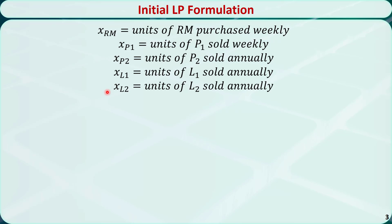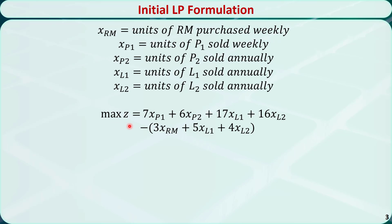With these definitions, the profit is equal to the revenues minus the costs. The total revenue is equal to the sum of the unit selling price times the quantity of each type of product. The total cost is equal to the raw material cost plus the further processing cost. The raw material cost equals the unit purchasing price times the quantity of raw material. The further processing cost equals the unit processing cost times the quantity of each type of luxury product.